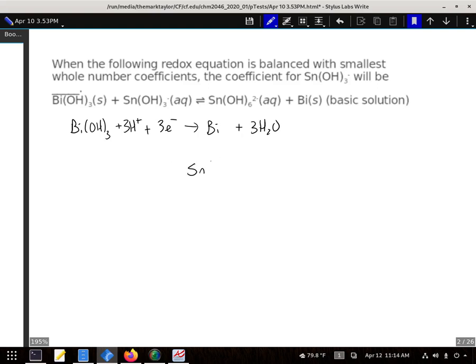Our second one is the Sn. There is a minus there, I almost can't see that. There's a two minus on this one. Same type of idea. Our Sns are fine. I have six oxygens on the product side but only three on the reactants, so I need to add three waters.